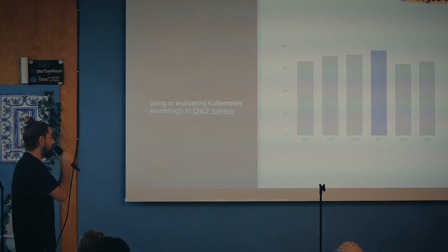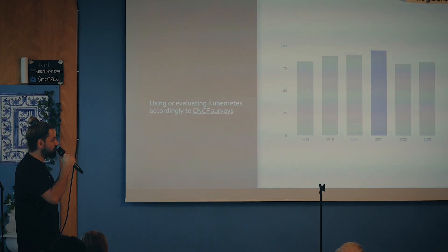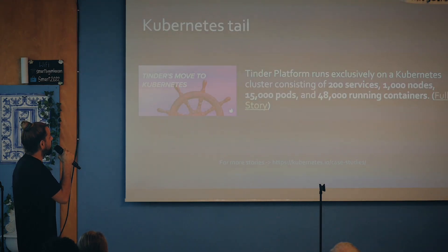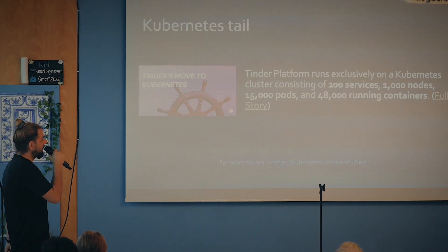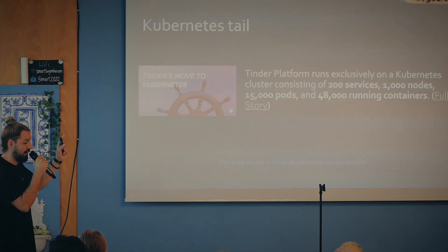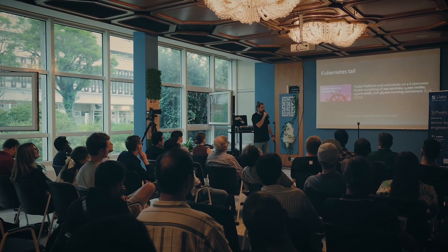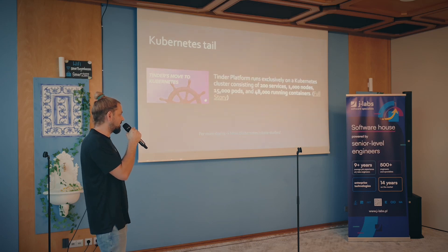This is a CNCF survey from 2018 to 2023. You can see that more than 75% of the participants are using or evaluating Kubernetes — it shows that people like it. You can also see a use case for Tinder, which exclusively runs on Kubernetes, consists of 200 services, 1,000 nodes, 15,000 pods, and 48,000 running containers. I will share this slide, and you can click the link to read the full story. For more stories like this, go to kubernetes.io/case-studies.